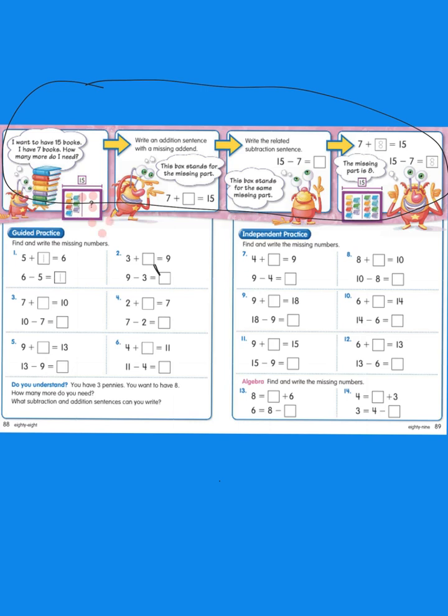So how many dots did I draw? If you count them, we drew, let's count. Let me get a little mouse here. 1, 2, 3, 4, 5, 6, 7, 8. So our missing addend would be 8.